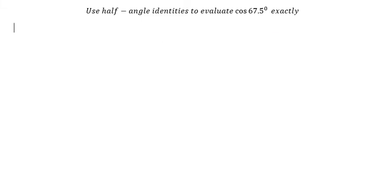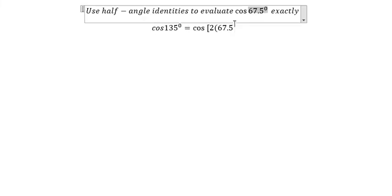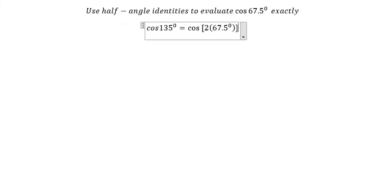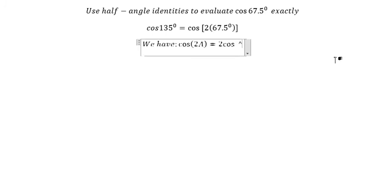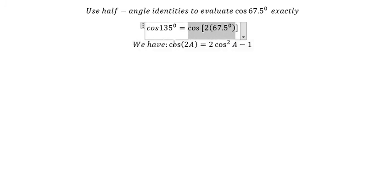We know that cos(135°) equals cos(2 × 67.5°). We have the formula cos(2A) = 2cos²(A) - 1, so we will apply this formula here.